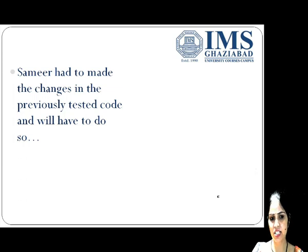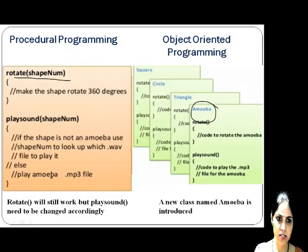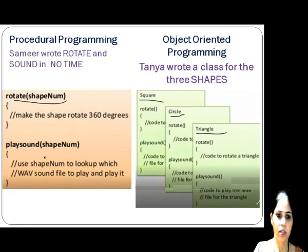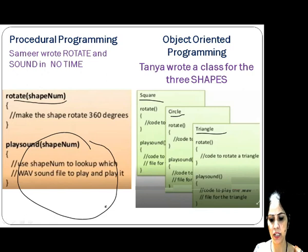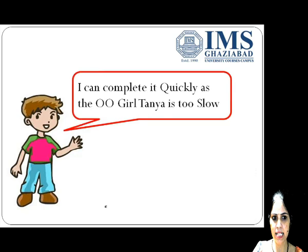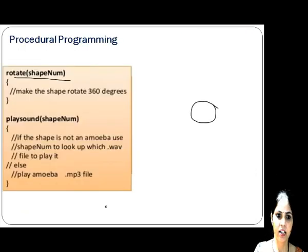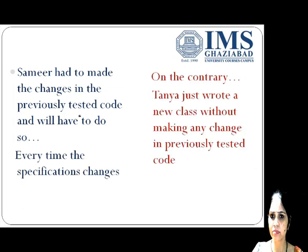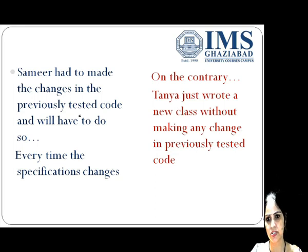Samir had to make changes in the previously tested code and will have to do so every time the specification changes. His play sound function previously only played the .wav file, but as soon as the manager changed the specifications, he had to change the play sound function. On the contrary, Tanya just wrote a new class and did not make any change in the previously tested code — she had already tested class square, triangle, and circle.